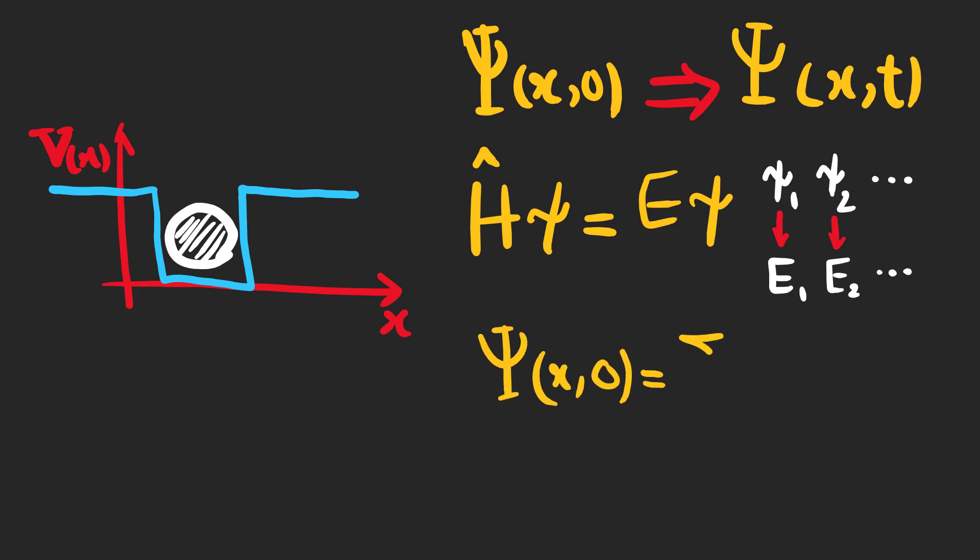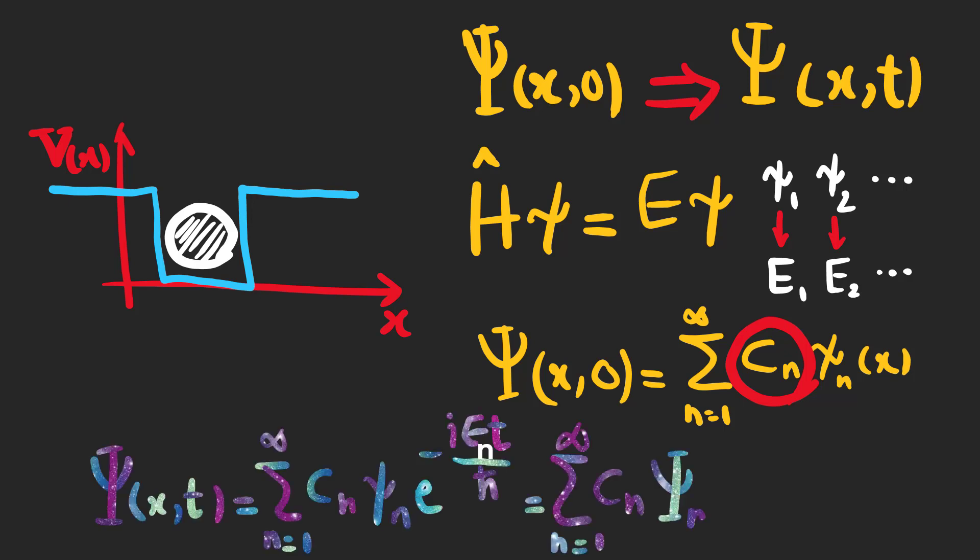The general linear combination of these solutions is psi(x,0) equals the sum of C_n psi_n from n equals 1 to infinity. The next step is to find different C_n and finally construct psi(x,t), the general solution at time t, by adding e to the power of minus i E_n t over h bar.